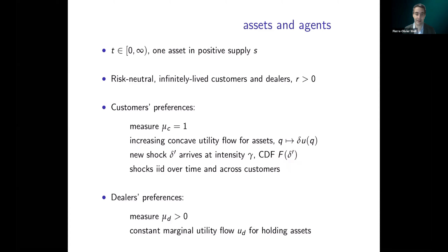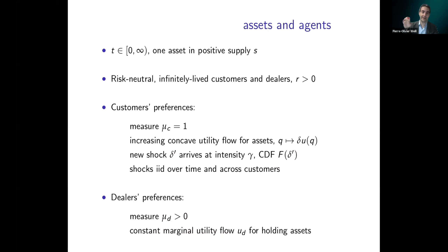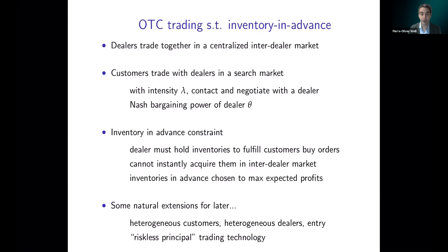Intermediation services are provided by dealers. There is a measure mu of dealers, and we assume dealers derive a marginal utility flow U_d for holding assets. This U_d plays a big role in our calibration because that is where we build in inventory costs. When we study what happens when we feed in an increase in inventory costs that produces a drop in inventory, what we do is reduce U_d.